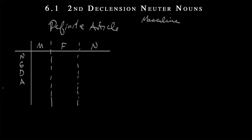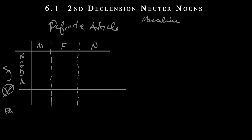Remember that we don't have a vocative article — only in the nominative and then the oblique cases: genitive, dative, and accusative. But we do have them in both the singular, up here on this top column, and then the plural on the bottom. Between the nominative and the genitive, you can always find out what type of noun, what class, what declension we're working with. So that's the reason why they are first. There's really no reason to put dative before accusative other than convention, so we're going to go with it.